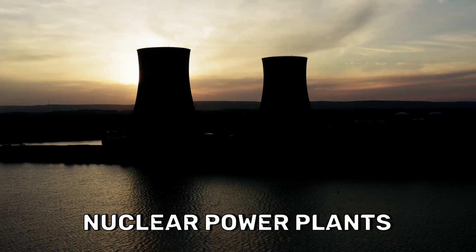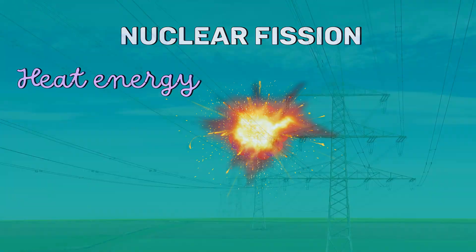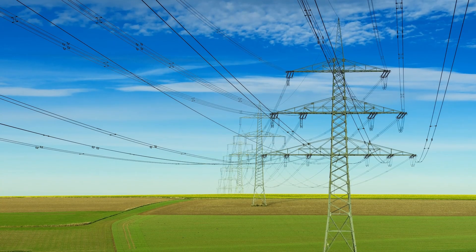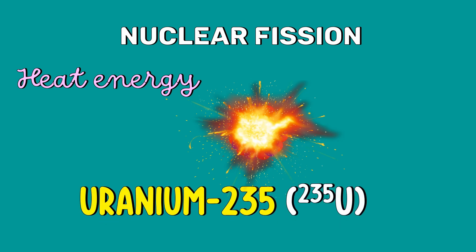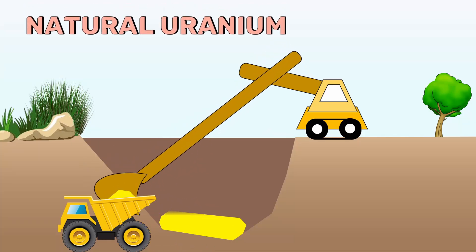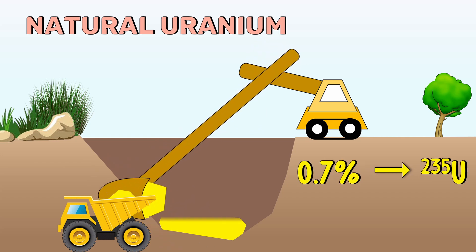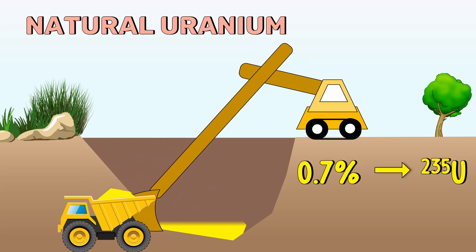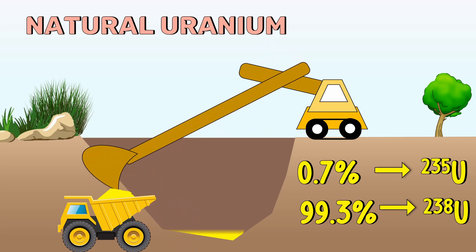In nuclear power plants, the heat energy produced during the fission reaction is used to generate electrical energy. The commonly used fuel for fission reaction is uranium-235. But the natural uranium we pull out of mines consists of only 0.7% uranium-235. The rest is made up of uranium-238.